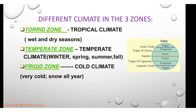For the different climates, we have three zones already discussed in previous topics: the torrid zone, the temperate zone, and the frigid zone. The torrid zone has tropical climate with wet and dry seasons. The temperate zone has four seasons — winter, spring, summer, and fall — which is not in the Philippines. The frigid zone has very cold or snowy climate all year, found in the Antarctic region or the North Pole.